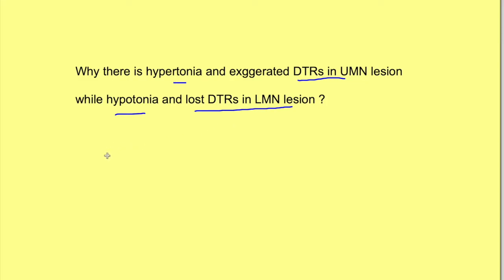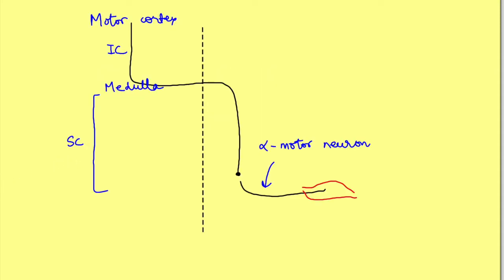To understand this, first we should know what UMN and LMN lesions are — just a quick revision. This simplified line diagram shows the pyramidal tract where the neuron arises from the motor cortex, passes via the internal capsule, crosses over to the other side at the level of the medulla, and then descends in the spinal cord.